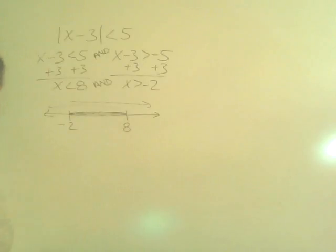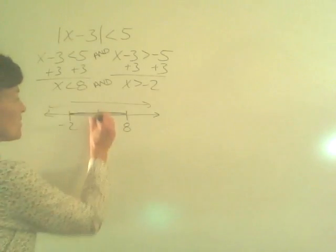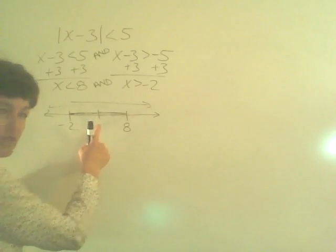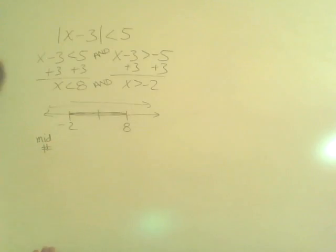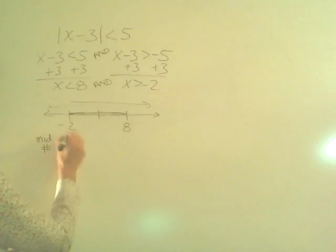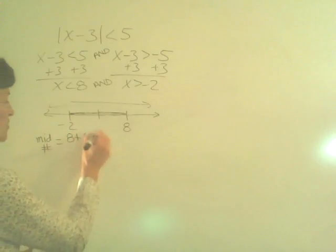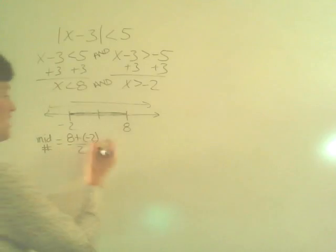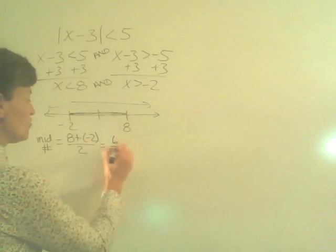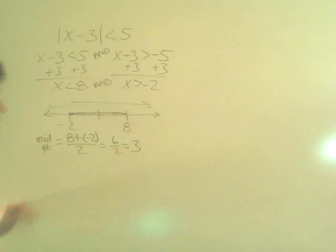Let's look at this graph and compare it to the statement. The middle number for this graph can be found by taking an average — remember that the middle of something is an average. So you simply add the two numbers, 8 and negative 2, and divide by 2. Well, 8 minus 2 is 6, and 6 over 2 is 3. So my middle number here is 3.